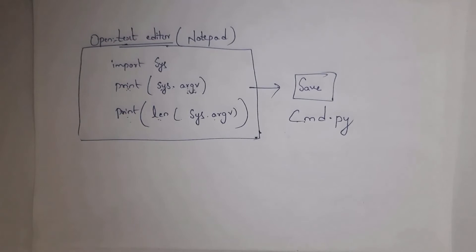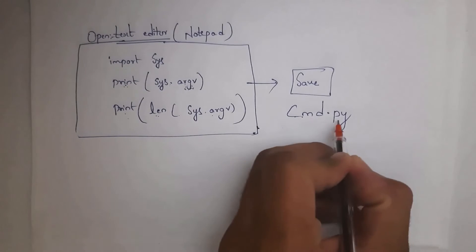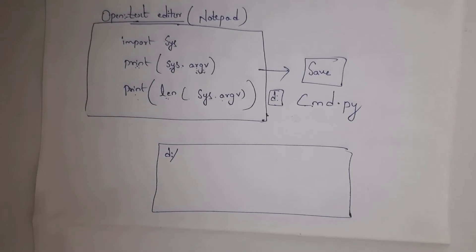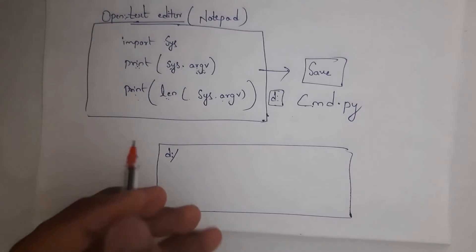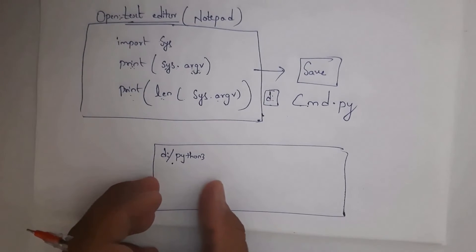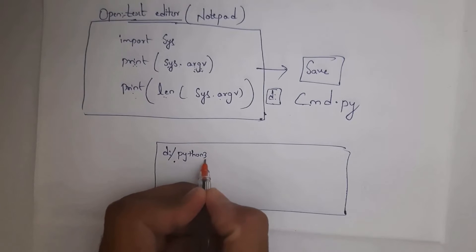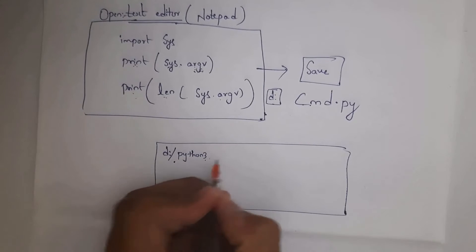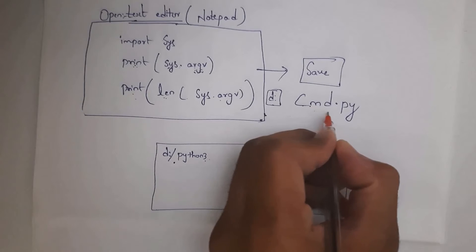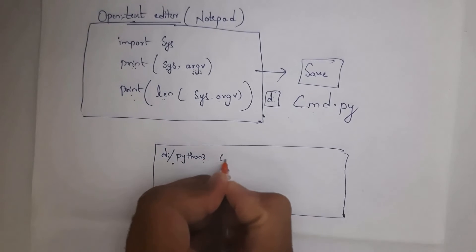After writing this program, you need to save it. You can give any name to your program. Here I am saving the program with the name cmd.py, and I am saving this file in local disk D. So you need to open the command prompt in the same location — local disk D. In the command prompt, type 'python3' followed by your file name. Here my file name is cmd.py, so just type 'cmd.py'.